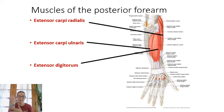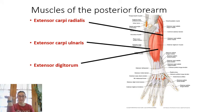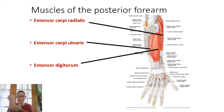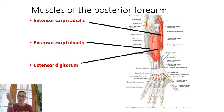On the dorsal (posterior) side of the forearm, we have extensor muscles. Extensor carpi radialis is on the radial side, extensor carpi ulnaris is on the ulnar side, and extensor digitorum runs all the way up to the fingers — all helping to extend the wrist backward.